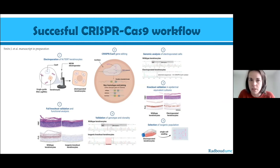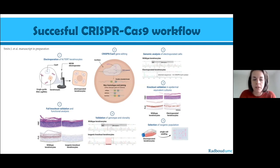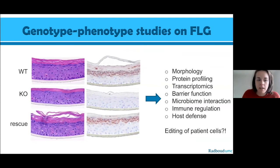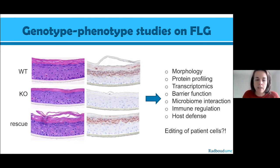We then clone the electroporated cells, validate the genotype of clonal lines with Sanger sequencing, and perform knockout analysis. Keratinocytes knocked out for filaggrin are fully devoid of filaggrin staining. To control for potential off-target effects, we use CRISPR-Cas9 again with a template DNA carrying the correct sequence to rescue and reinstate the filaggrin protein in these cells. A full readout and follow-up analysis is currently ongoing.